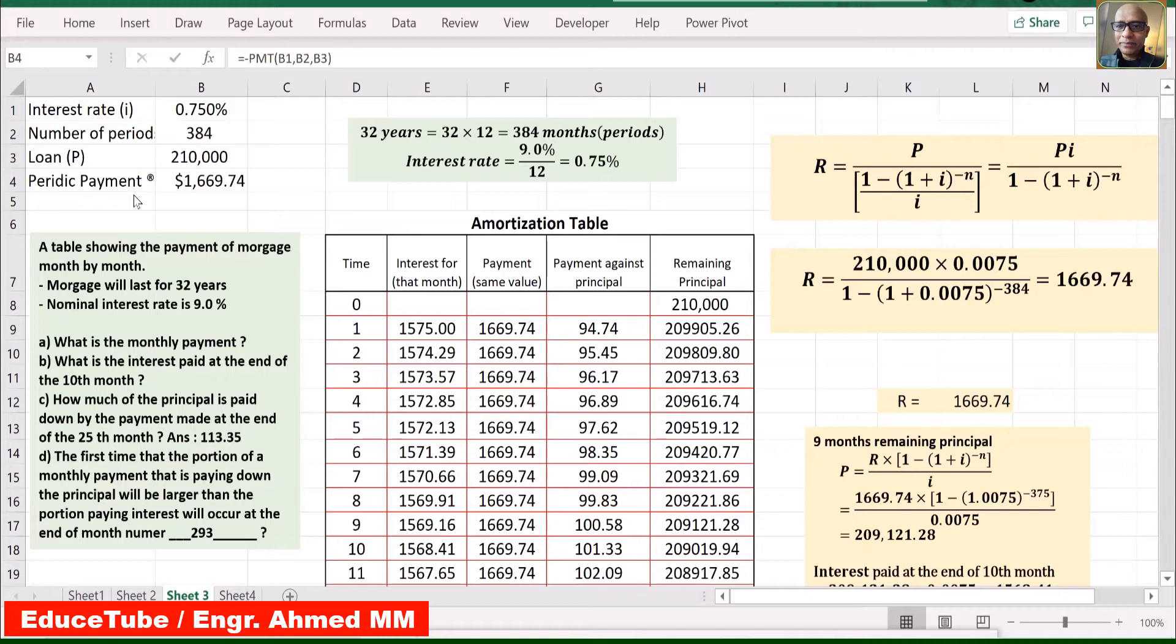So to get this period, we multiply 32 by 12 and get 384 months or periods. Now we have the interest rate, number of periods, and loan amount. Using these three numbers, we can calculate periodic payments using Excel's PMT function or using this formula.